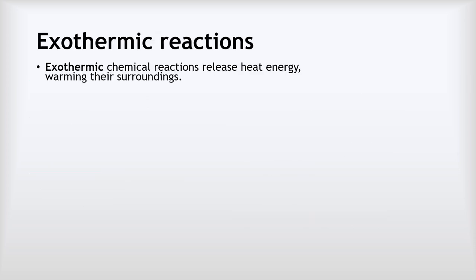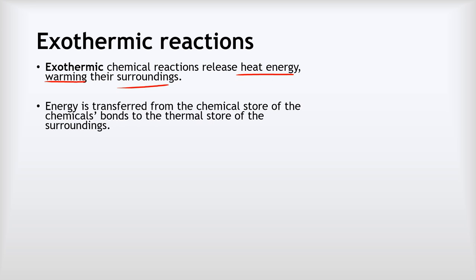So what do we mean by exothermic reactions? An exothermic reaction is a chemical reaction that releases heat energy, and so it warms its surroundings. The temperature increases. In an exothermic reaction, energy is transferred from the chemical store of the chemicals' bonds to the thermal store of the surroundings. By the surroundings, we're talking about the chemicals themselves — they will warm up, as will any solution that the chemicals are reacting in, as will any container, and more generally, their wider surroundings. So heat is released and the temperature of everything around the reaction will increase.